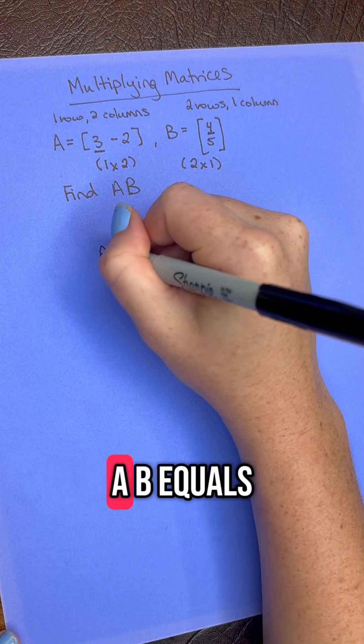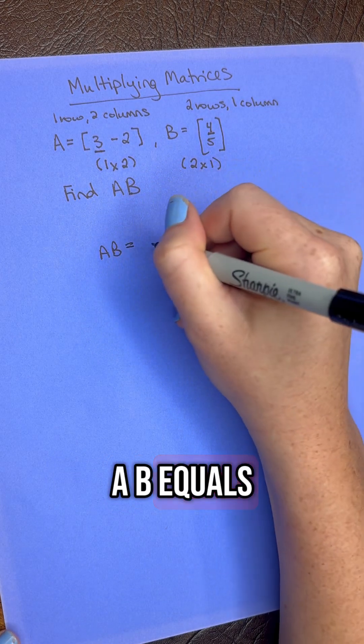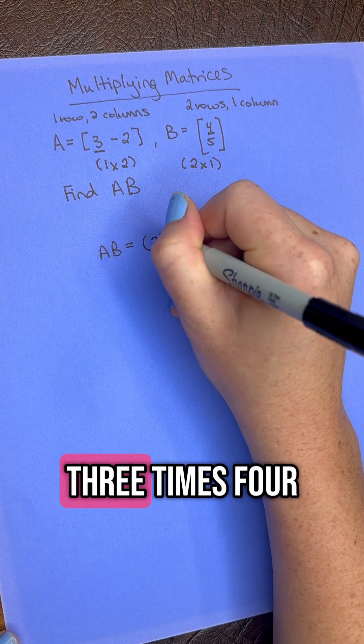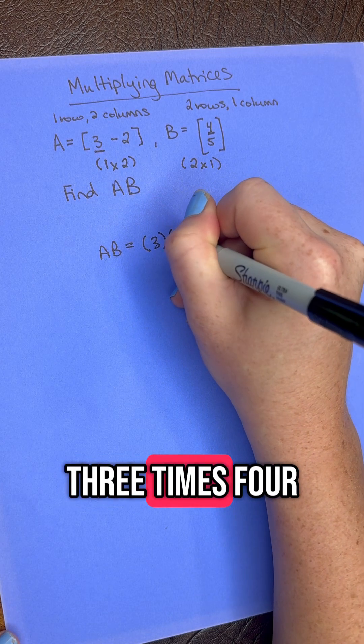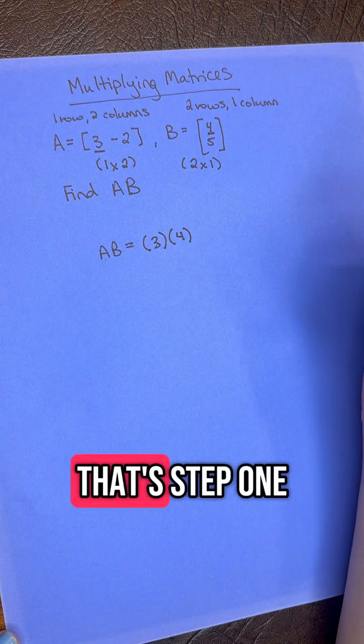So you have A B equals, first we're doing 3 times 4. That's step 1.